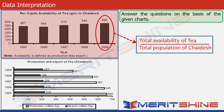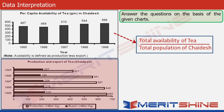Now let's look at the second chart. It shows the production and export values of tea for Chayadesh for five years, and these values are in million kg. For example, the data for 1995 shows 421, meaning the total production of tea in Chayadesh in 1995 was 421 million kg. Out of this, the smaller bar — 207 million kg — has been exported.